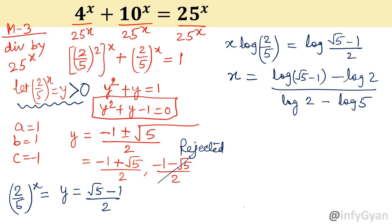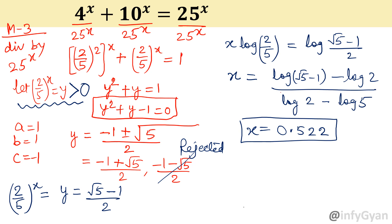Putting all the values respectively, x comes out to 0.5222 — matching the earlier answers. You can see why: when dividing by 10 power x and by 25 power x, both cases give the same quadratic equation y square plus y minus 1 equal to 0. That is why the values are the same. By the third method also it comes out the same.